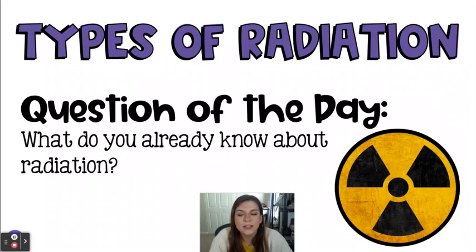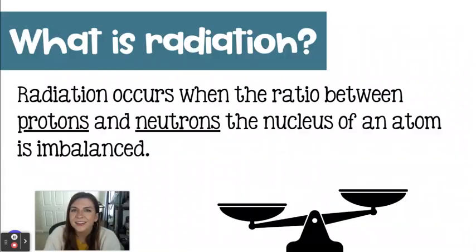Hello, welcome to this lesson on the types of radiation. The question of the day: what do you already know about radiation? Very simply put, radiation occurs when the ratio of protons to neutrons is just off balance. Protons are positive. If you put too many positives in too small of a space, they will repel each other.